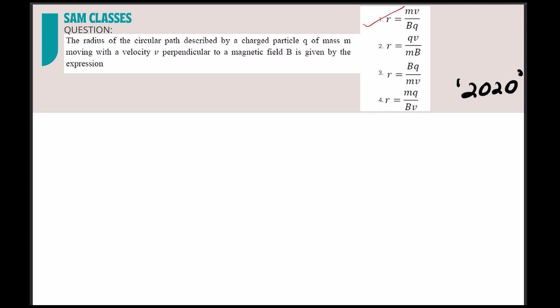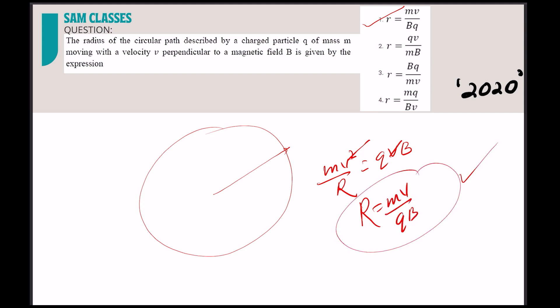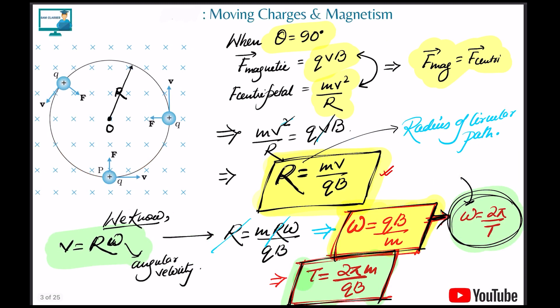Was this question very difficult? No, it was very simple. What you need to remember is that the electron is moving in a circle, so centripetal force is required, and the magnetic force provides it. Solve it and you get the answer: r = mv/qb. A very simple question.